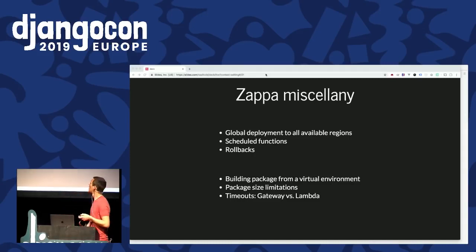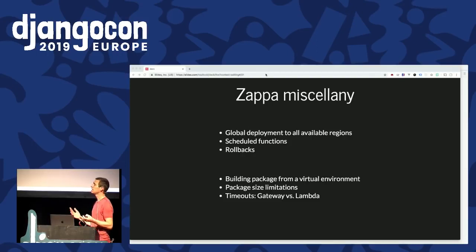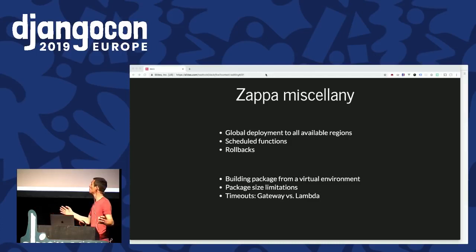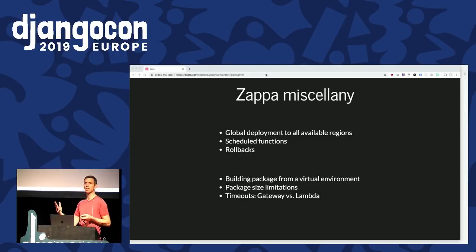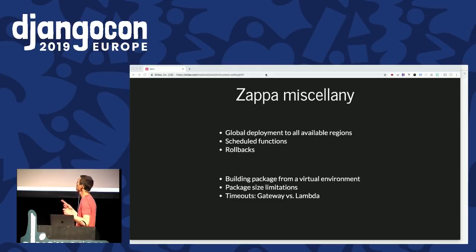Zappa miscellany: there are lots of other features not yet covered. You can deploy to a particular region, or with a simple toggle get Zappa to deploy to all available regions — good for global reach, where latency is lower because people hit Lambda functions closest to them. You can have scheduled functions, effectively running cron tasks in this environment, usually wrapped around your own management tasks — Zappa uses these to keep Lambda functions warm. It also has rollback — so if something's gone wrong after a deploy, you can roll back to an earlier version.